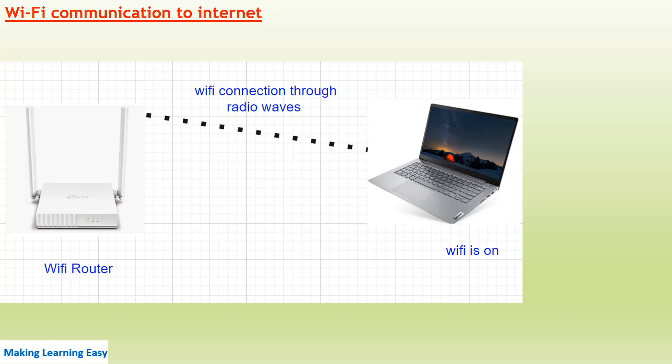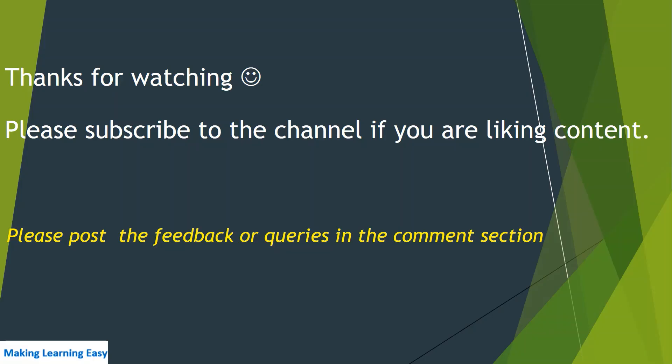For Wi-Fi connection to the internet — if the internet service provider has given you a Wi-Fi router, you can use the Wi-Fi connection to connect your laptop. You switch on the Wi-Fi on your computer, the Wi-Fi router is also switched on, and you can use the Wi-Fi connection. These are the different ways you can connect to another computer or device like a router, modem, or switch. That's all for this session — thanks for watching, see you in the next video.